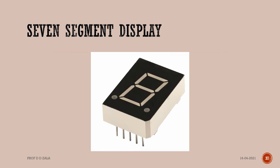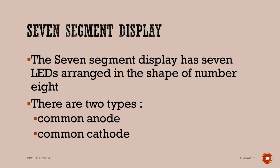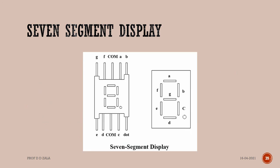Let us now move on to the seven-segment display. The seven-segment display has seven LEDs arranged in the shape of the number eight. There are two types of seven-segment display: common anode and common cathode. In the seven-segment display, pins A, B, C, D, E, F, G, and two common pins are available.